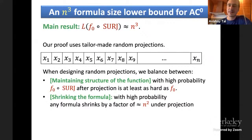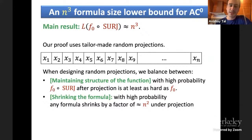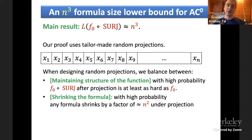Our proof uses tailor-made random projections where the projections are not independent — they maintain the structure of the function tailored to its structure — while also shrinking the formula. Keeping a balance between these two properties is where most of the analysis goes. This is inspired by the work of Rossman and Servedio which did something similar to separate depth D from depth D+1. Thank you.